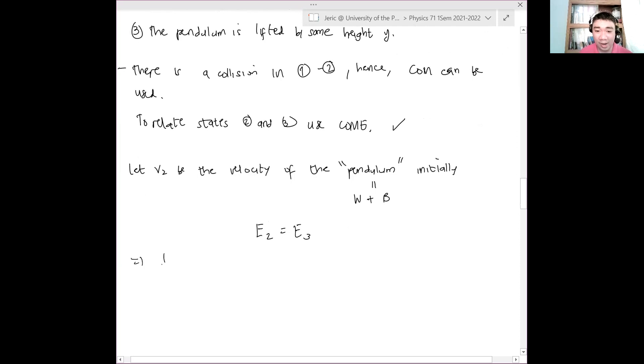And therefore, we have one half. Remember, we have a wood plus bullet. Therefore, the total mass that we will be considering here is the total mass of the system, which is the mass of the wood plus the mass of the bullet.